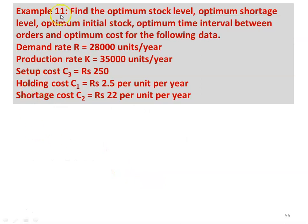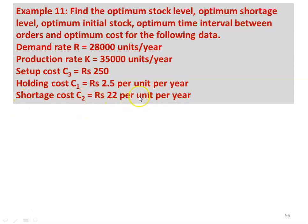We take another example — Example 11. Find the optimum stock level, optimum shortage level, optimum initial stock, optimum time interval between orders, and optimum cost for the following data: demand rate R = 28,000 units per year, production rate K = 35,000 units per year, setup cost C3 = ₹250, holding cost C1 = ₹2.5 per unit per year, and shortage cost C2 = ₹22 per unit per year.